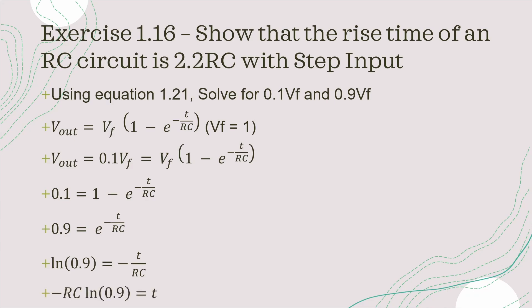And now rearranging the equation so that we have t by itself, minus RC natural log of 0.9 is equal to t.